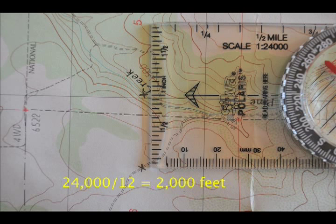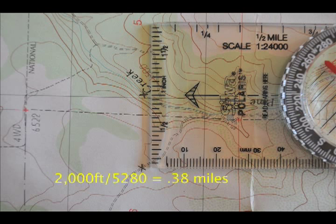Now that's the same as 2,000 feet if we simply divide 24,000 by 12, since there are 12 inches in a foot. It's also the same as about 4 tenths of a mile. You can convert from feet to miles by dividing by 5,280, which is the number of feet in a mile.